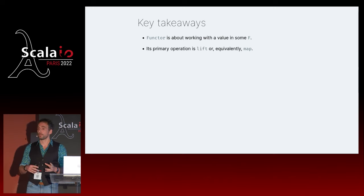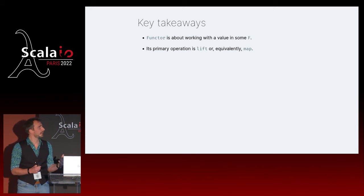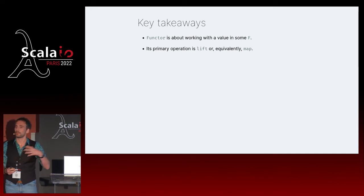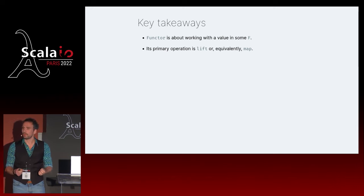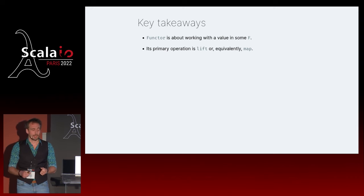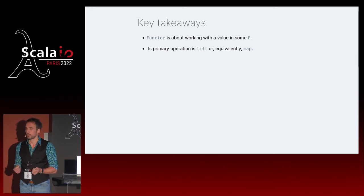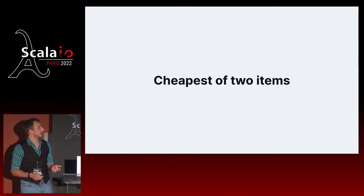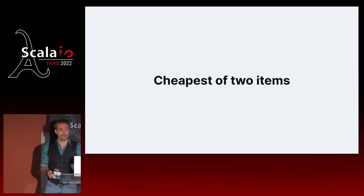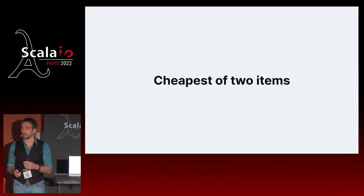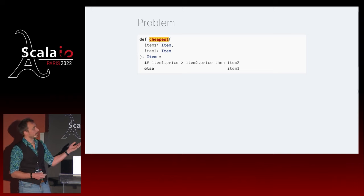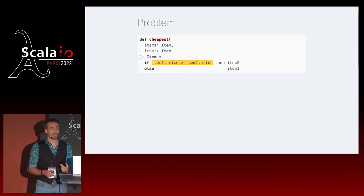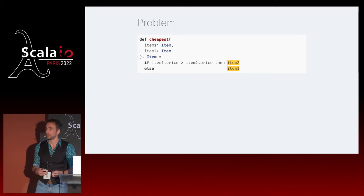That was the first step: we filtered all the data from our online marketplaces to only find items we could afford. But that's definitely going to yield at some point two different items at different prices, both items we want. In that case we obviously want to buy the cheapest of the two, so we want to compare two items together. The implementation is fairly straightforward: cheapest, given two items, compares the prices and returns whichever one is cheapest.